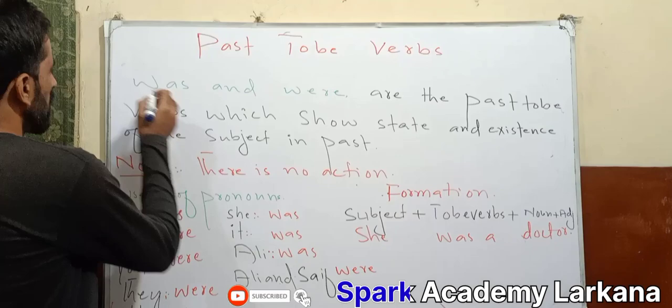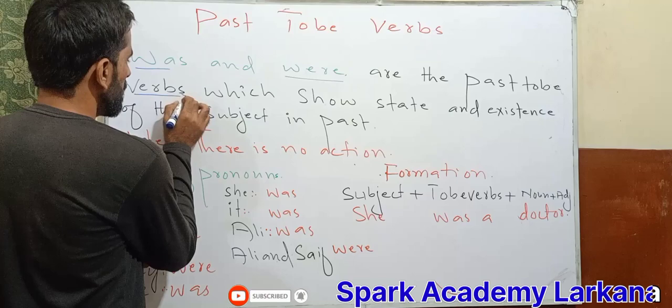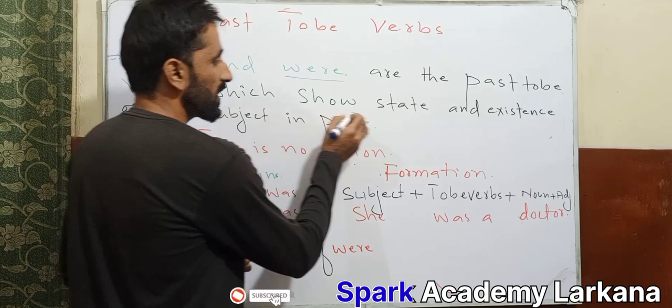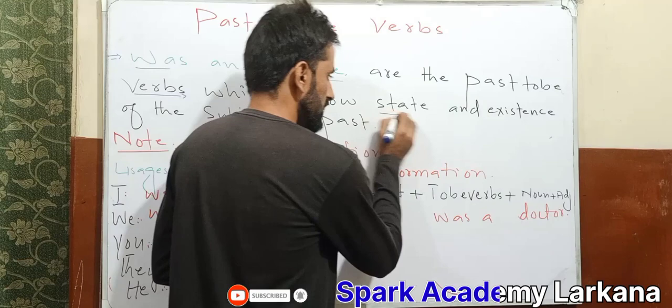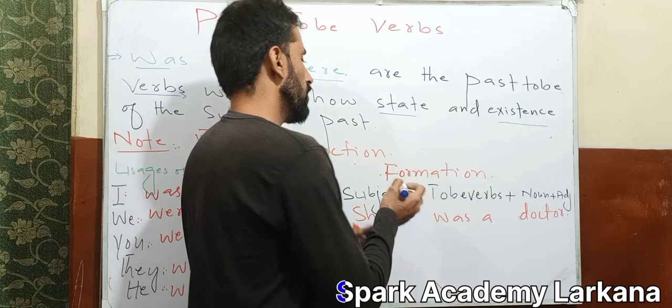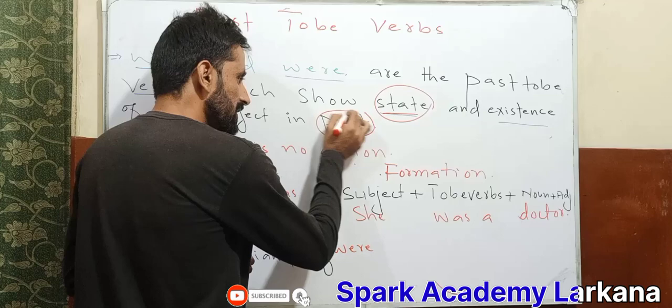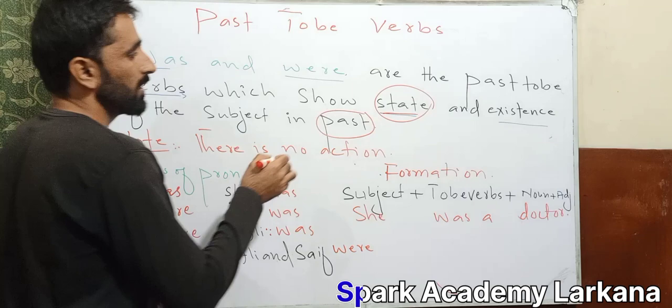We will discuss about the past to be verbs: 'was' and 'were'. Was and were are the past to be verbs. These past to be verbs show state and existence. We will discuss two things — one is state and the other is existence — which shows state and existence of the subject in past time. In present to be verbs, we showed state and existence of the present time, but here these show state and existence of the past time.